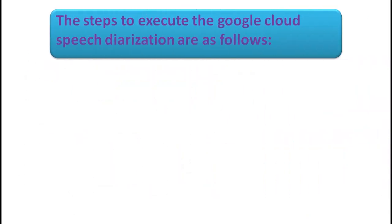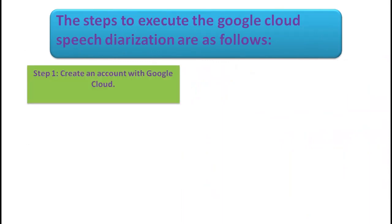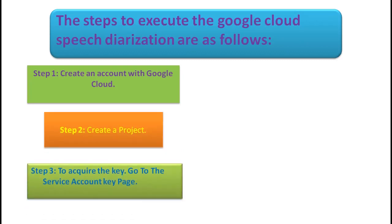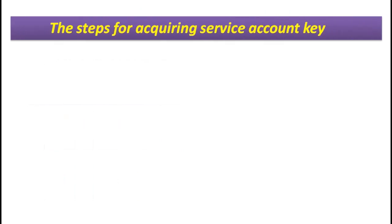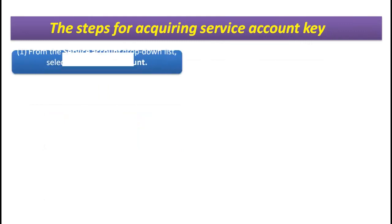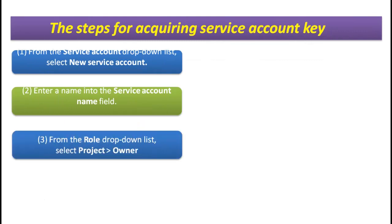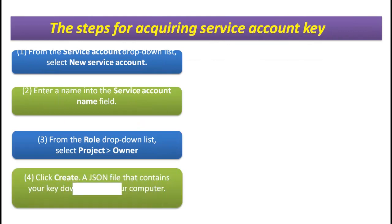Here are the steps to execute Google Cloud speech diarization. First, create a Google account with Google Cloud. Next, create a project. Third, to acquire the key, go to the service account key page. For the steps for acquiring the service account key: from the service account drop-down list, select 'New Service Account' and enter a name in the service account name field. From the role drop-down list, select 'Project Owner.' Finally, click 'Create' — a JSON file that contains your key downloads to your computer.